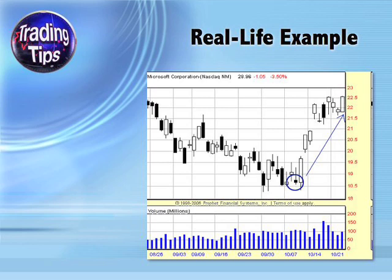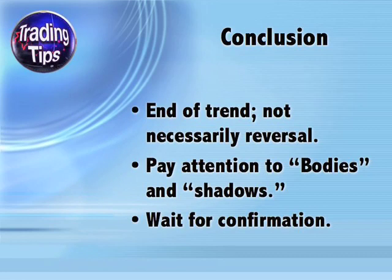Here's an example of an inverted hammer occurring on a real stock chart. Notice that the inverted hammer does have a little bit of a lower shadow, but it's still very short. There's a substantial gap between its real body and the real body of the previous day's candlestick, and its upper shadow is much longer than its real body. It occurred amid a general downtrend and sure enough signaled the reversal of that trend.